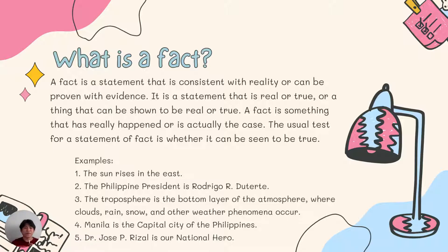Here are some examples. The sun rises in the east — obviously it doesn't rise in the north, west, or south, obviously in the east. The Philippine president is Rodrigo R. Duterte. The troposphere is the bottom layer of the atmosphere where clouds, rain, snow, and other weather phenomena occur — it can be proven.